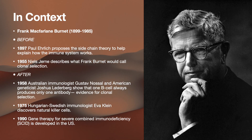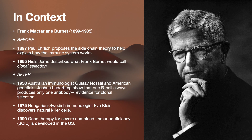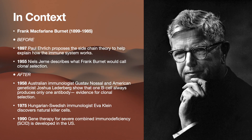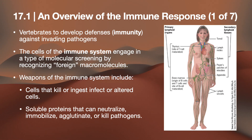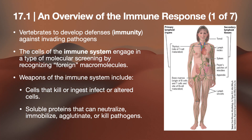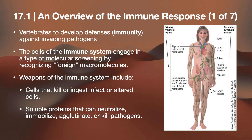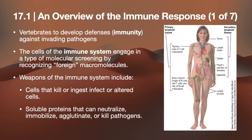Frank Macfarlane Burnet lived from 1899 to 1985. The human immune system includes many lymphoid organs such as the thymus, bone marrow, spleen, lymph nodes, and scattered cell patches within the small intestines, adenoids, and tonsils. Vertebrates develop immune defenses that fight against invading pathogens.